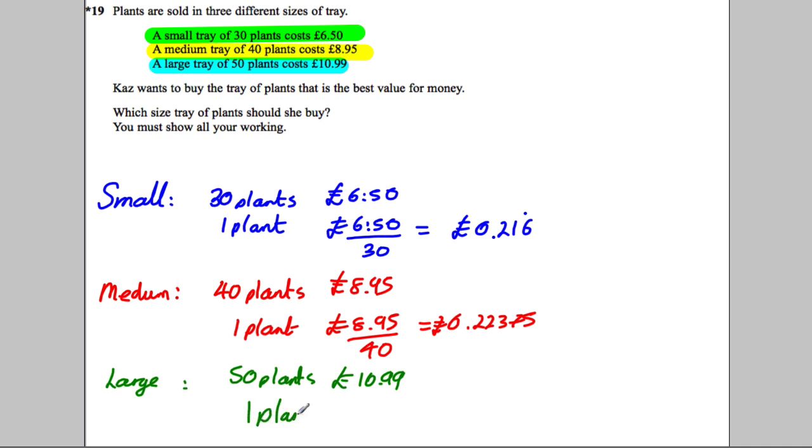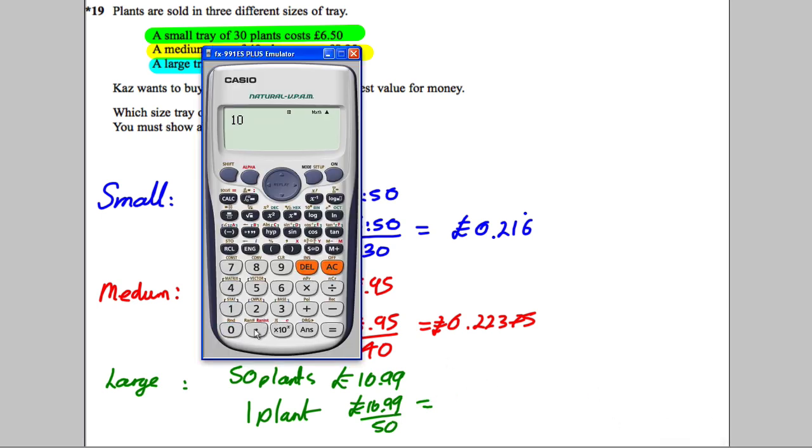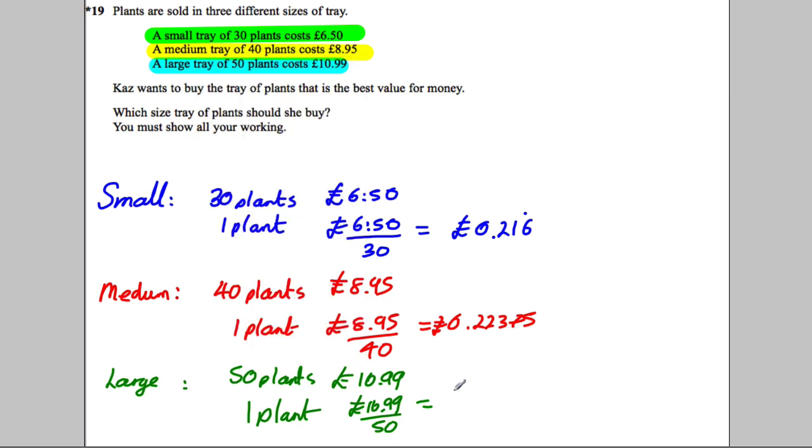So if you do £10.99 divided by 50, you get, it's equal to 0.2198 pounds.